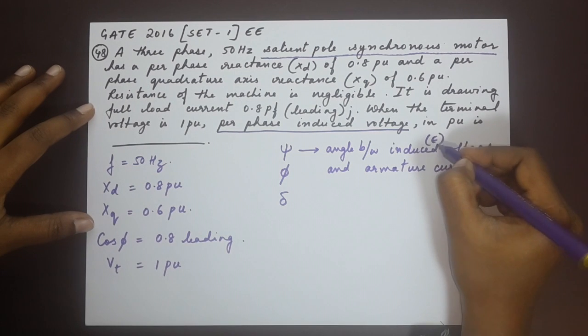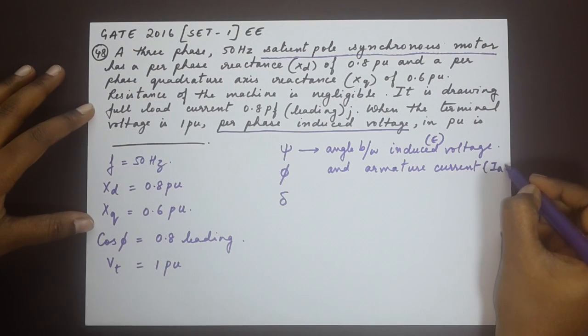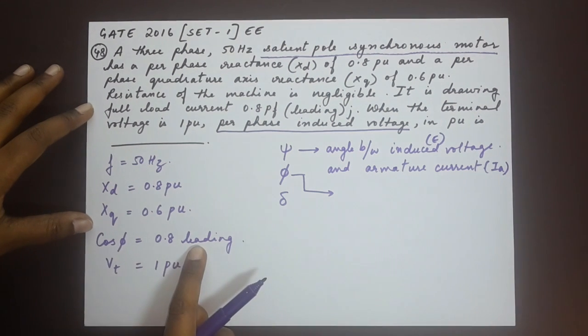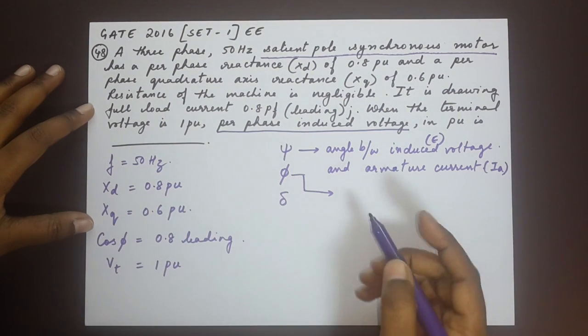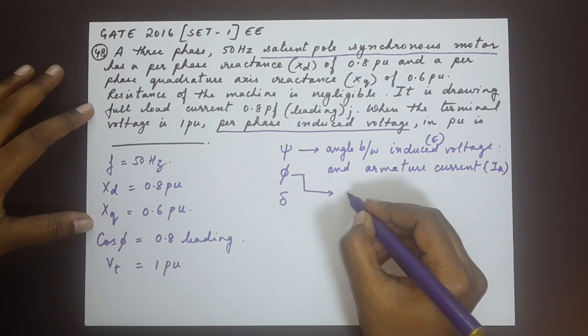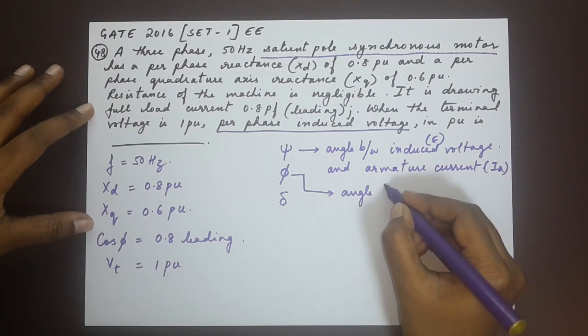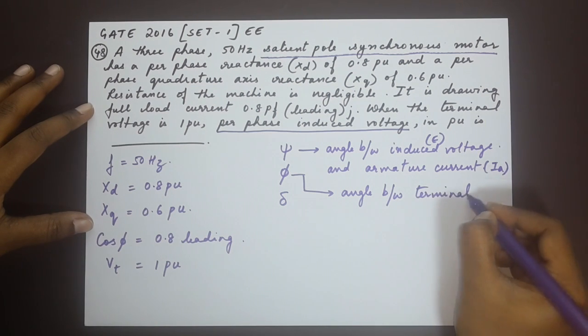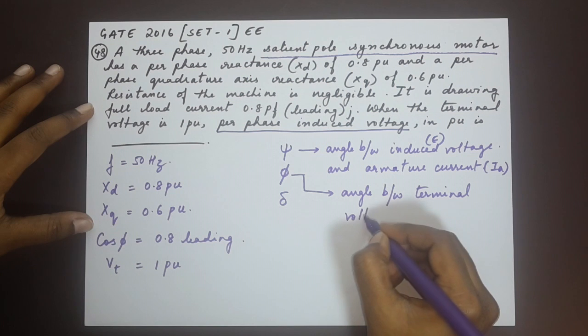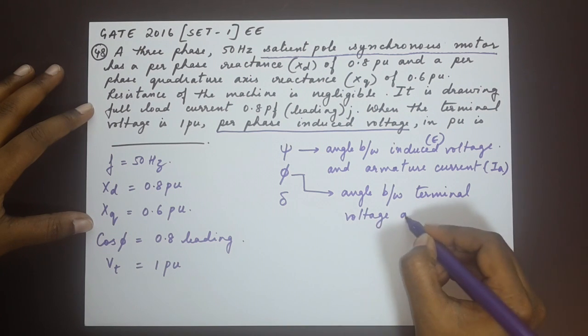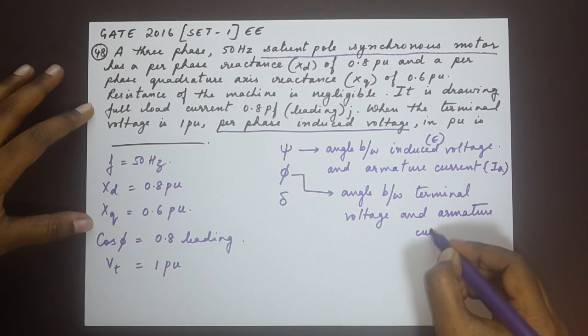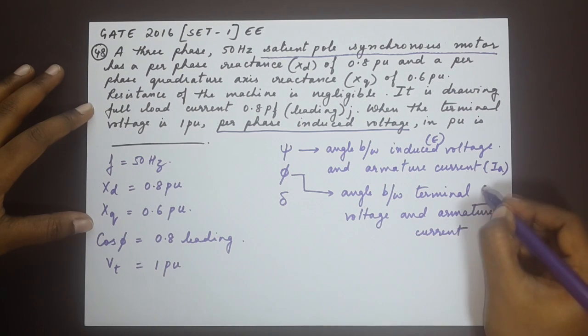Induced voltage is what we need to find, let us call that E, armature current is Ia. Now phi is what we have, that is usually referred to as the power factor. The phi is the angle between terminal voltage and armature current, Vt and Ia.